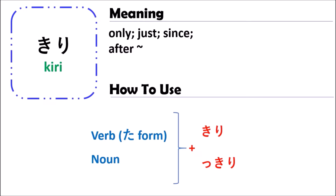In Japanese, when you use the grammar of kiri, you can use it with a verb or a noun. But with a verb, you can use it only in the past tense form — no dictionary form, no negative form. So remember that you can use kiri only with the past tense form. For a noun, you just attach kiri directly.